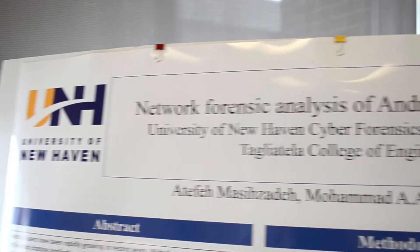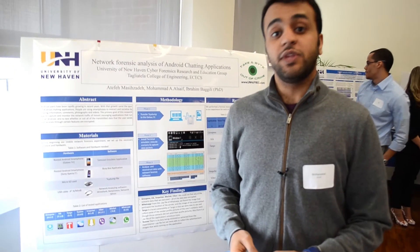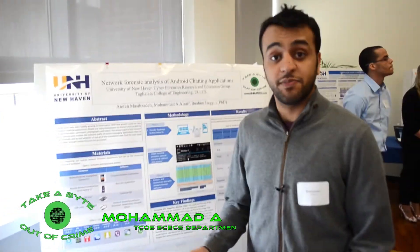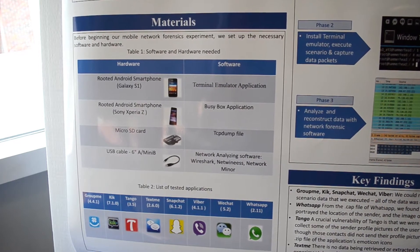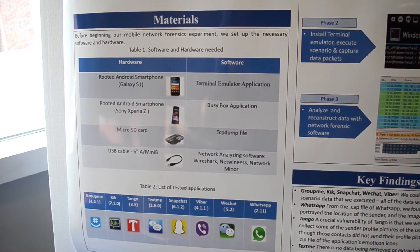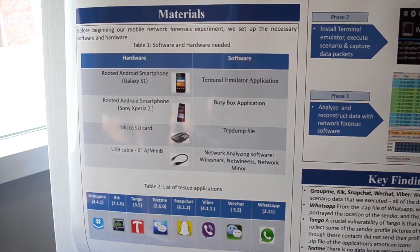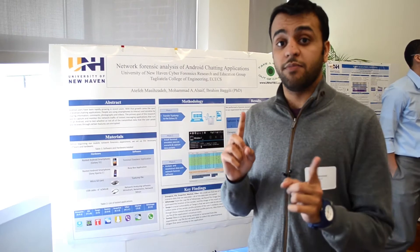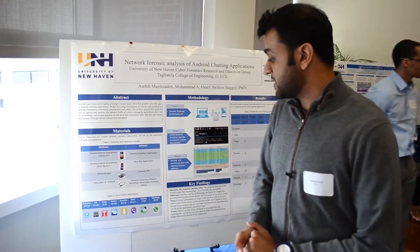My project is network forensic analysis of Android chatting applications. We did analysis for eight chatting applications to see if the data is encrypted. To do that, we used a rooted Android smartphone — a Galaxy S1 — with applications installed on the phone to capture the network traffic and data packets that go between two phones during any conversation on any of these applications.